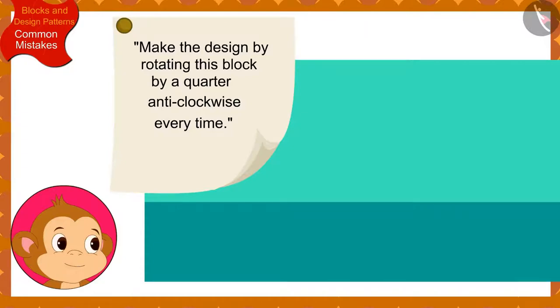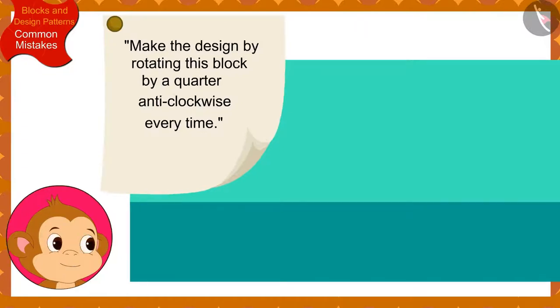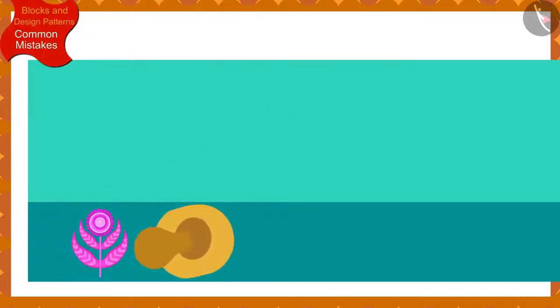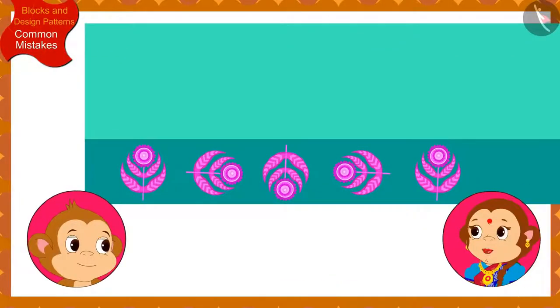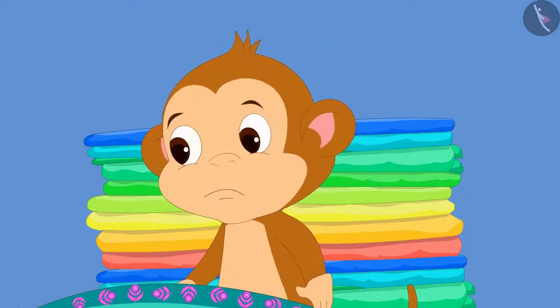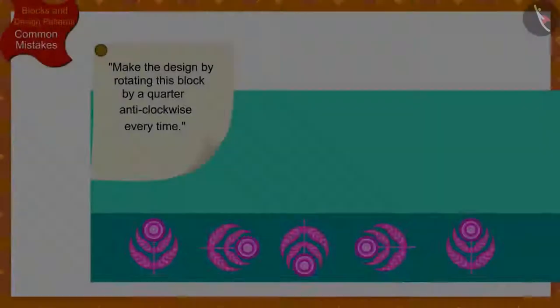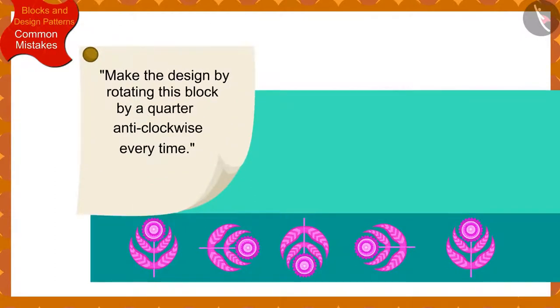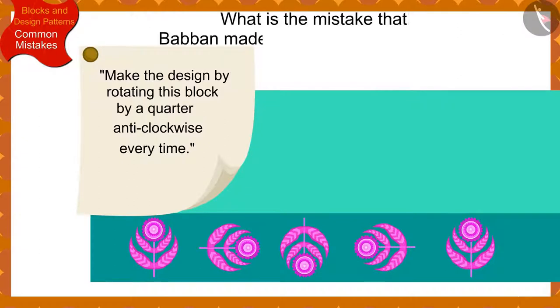This is so easy, thought Babban, and quickly made this design using the block on the first saree. Babbanji, you made the wrong design, Banno told Babban. Poor Babban could not understand what mistake he made while creating the design. Children, can you tell by looking at Banno's instructions and Babban's design what mistake Babban made while making the design?